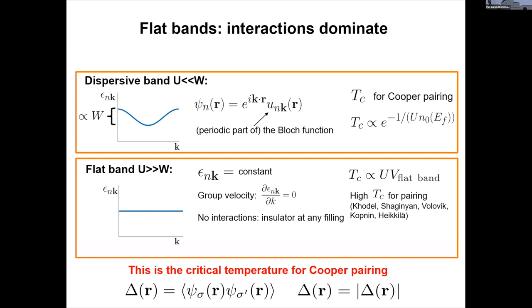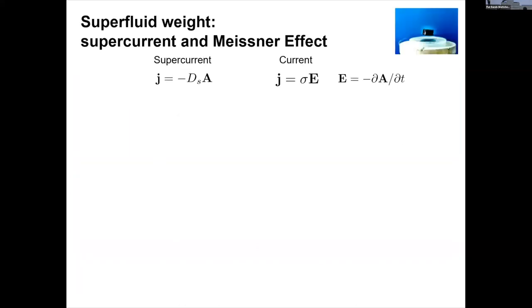Now, this however tells you only about the pairing, Cooper pairing, whether you have pairs or so on, essentially about the absolute value of your order parameter. And that's not all because for superconductivity, you have to see whether you have supercurrent and Meissner effect. And for that, the concept of superfluid weight becomes very important. That's you can relate to current relation and then supercurrent relation, you see, it's very different. Fundamentally here, you have the vector potential here, electric field. And this thing is like conductivity, but it's called superfluid weight.